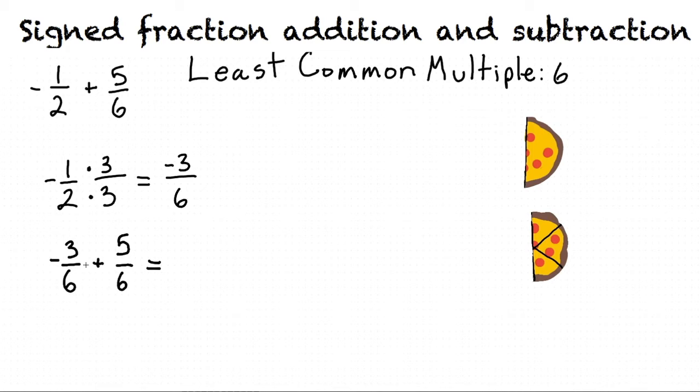Now that the denominators are the same, we can add the fractions by keeping the same denominator and adding the numerators, negative 3 plus 5, to get an answer of 2 sixths.